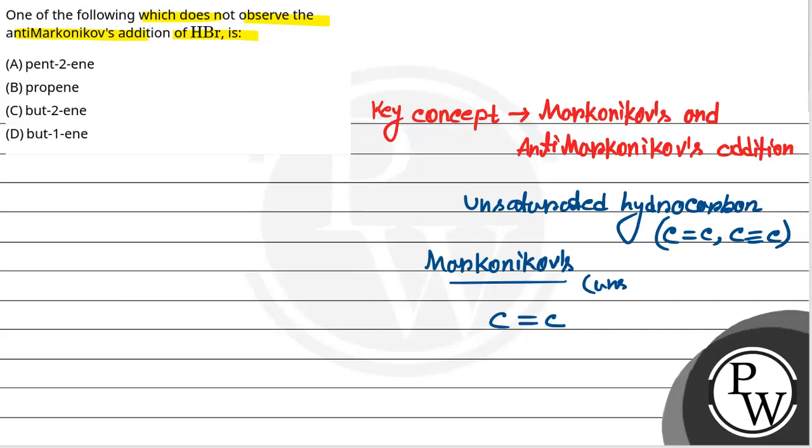If it has a double bond and one side has methyl group and the other side has hydrogen, the alkene will take up H plus and leave Br minus. H plus will go to which carbon? It will go to the carbon which has more hydrogen because of stability. The carbon with more hydrogen will form a more stable carbocation.